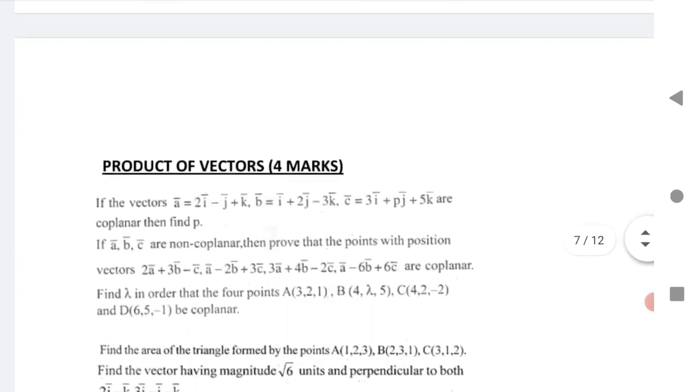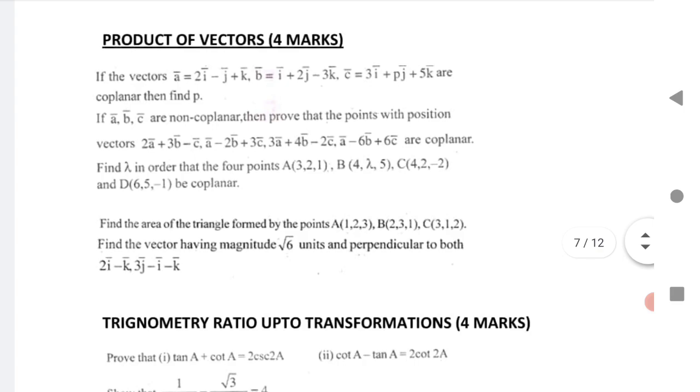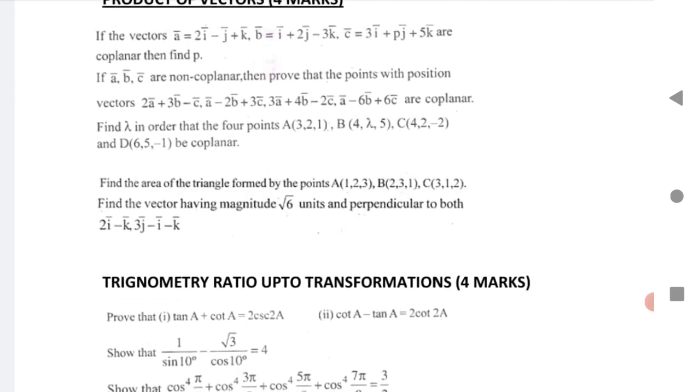Next is product of vectors. Very important questions I have given here. If these three vectors are coplanar then find P. Then non-coplanar vectors are given. Put in the points the given points are coplanar. Next is find lambda in order for four points, four points are given and they are to be coplanar, you have to find out the lambda.